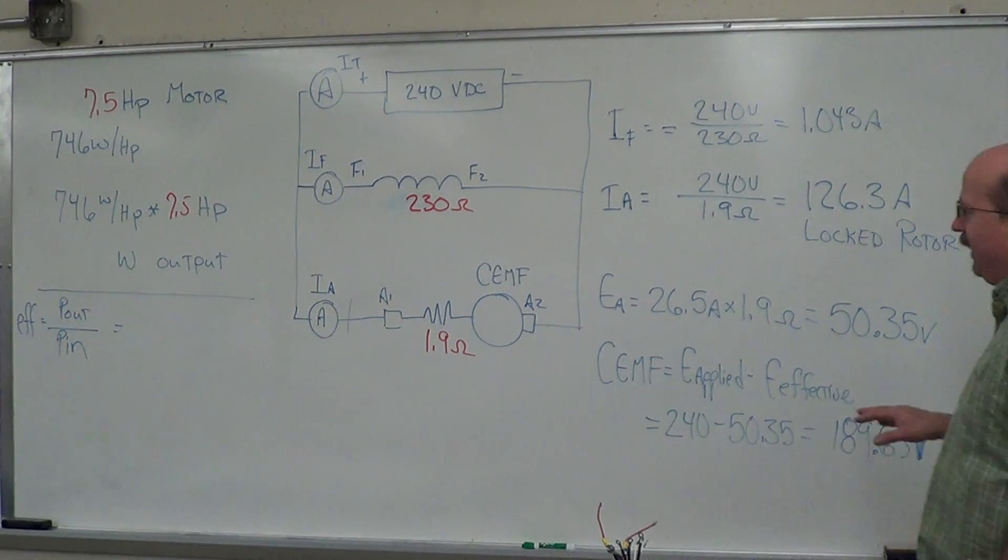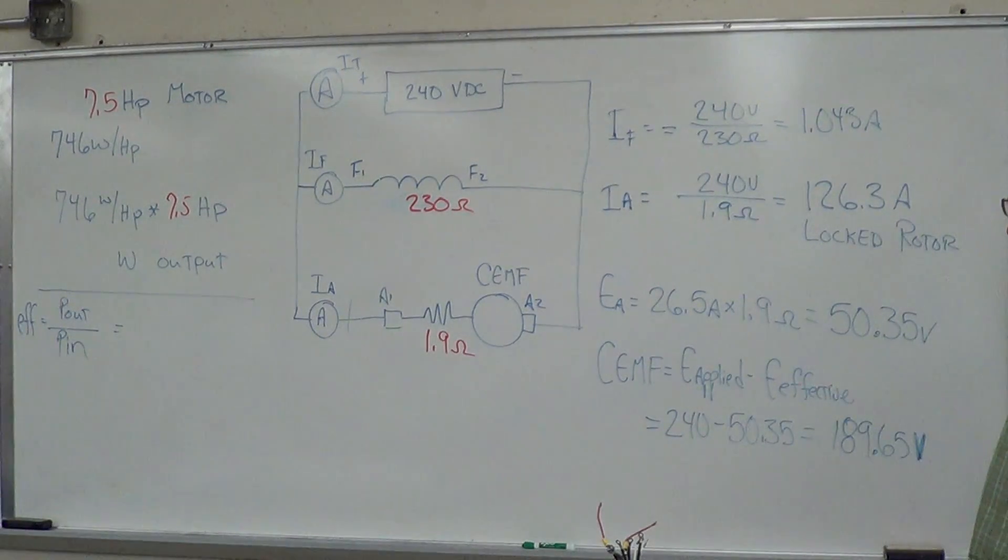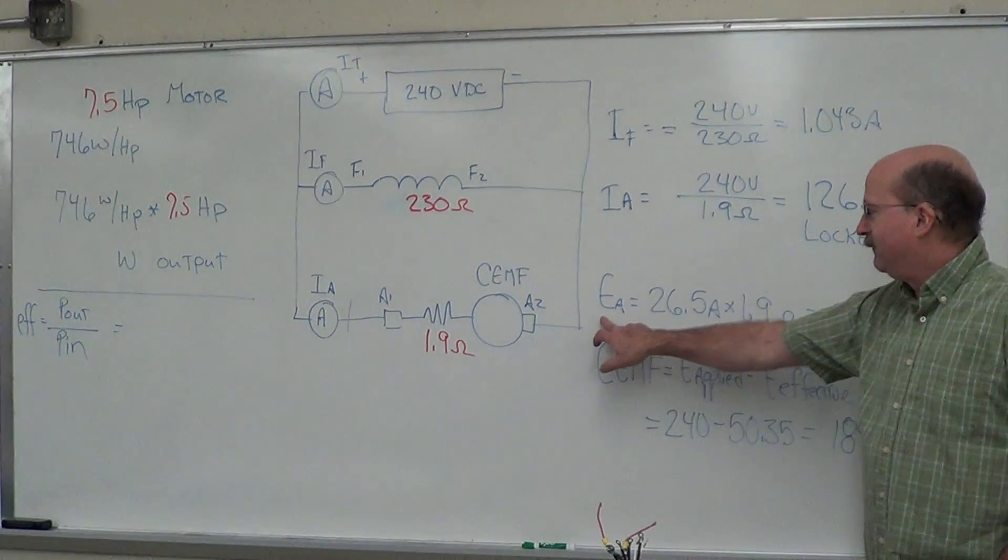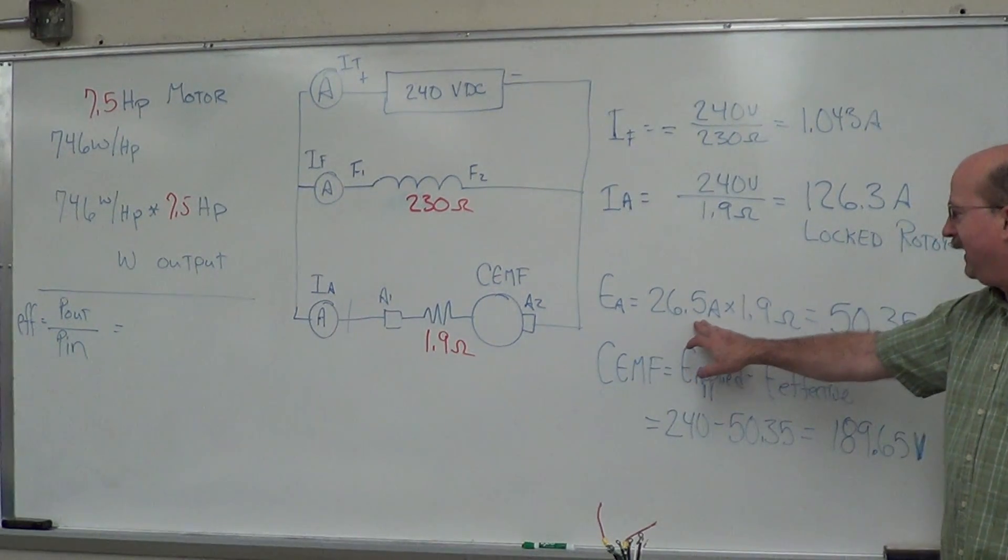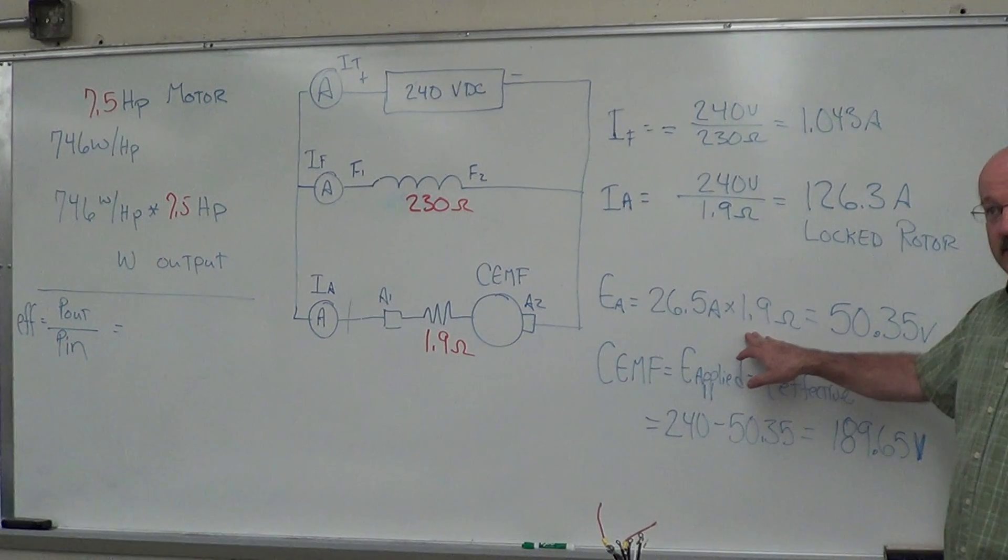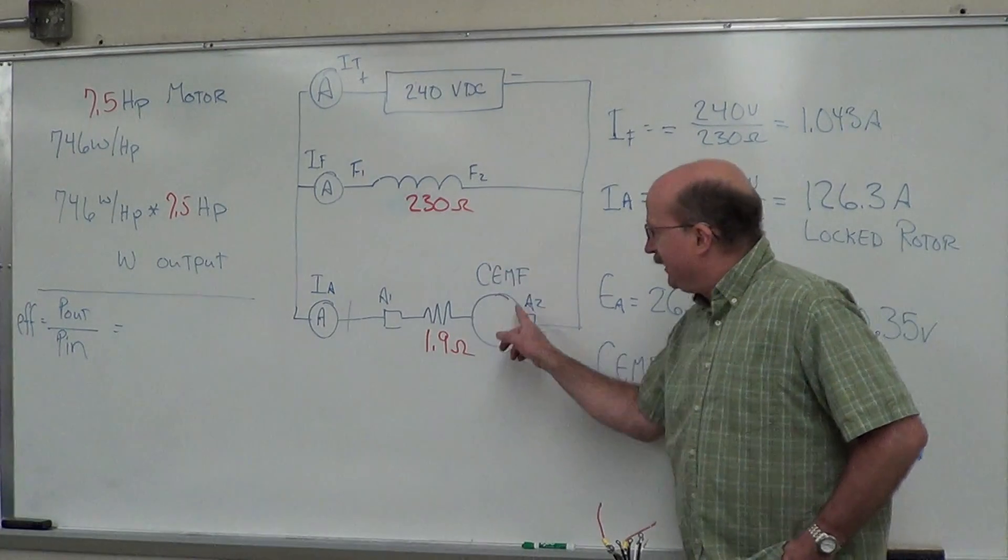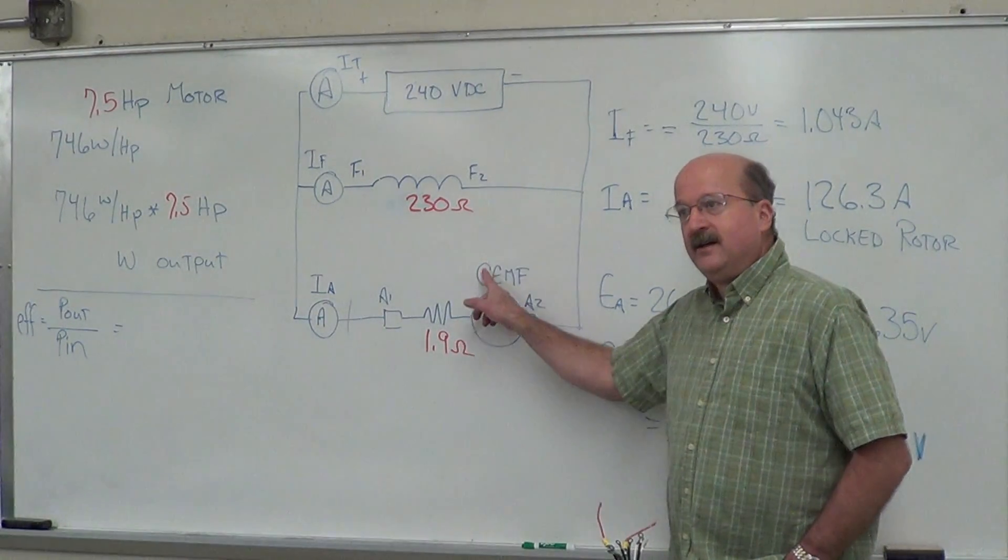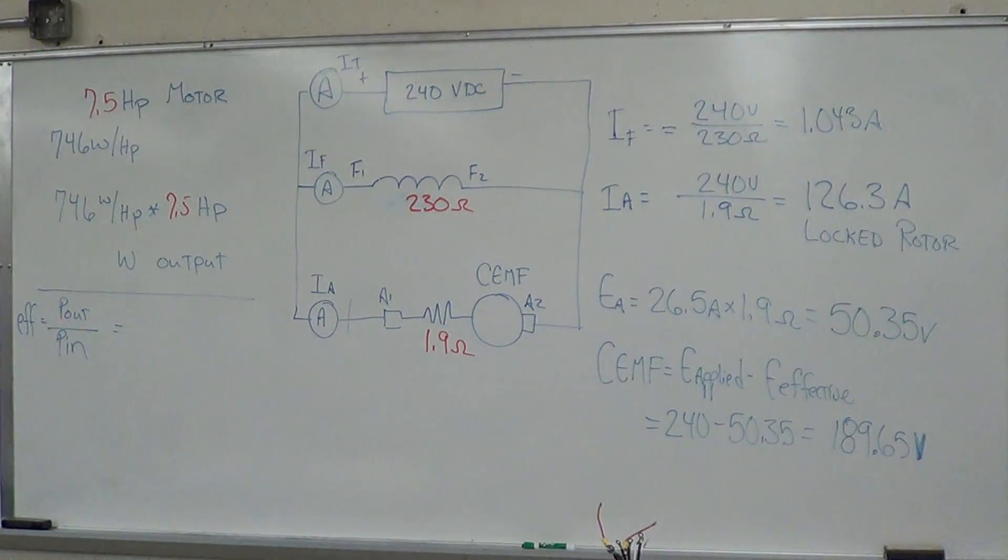You'll have some counter-EMF developed and that current will start going down. Now, we want to calculate what the counter-EMF is. We'll look at the effective voltage that's applied to the armature there, 26.5 amps times our 1.9 ohms. We'll have an effective voltage of 50.35 volts.